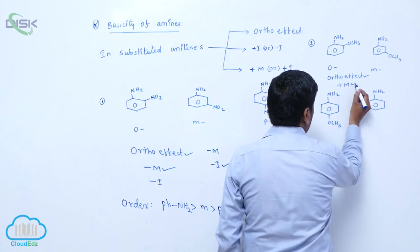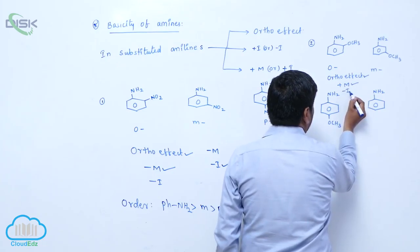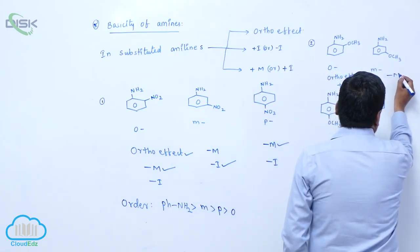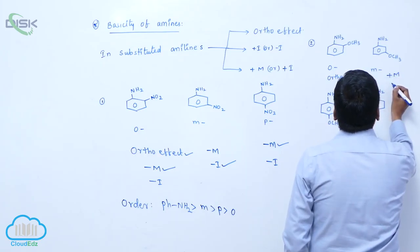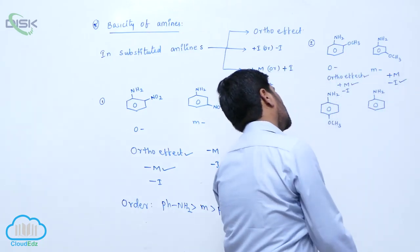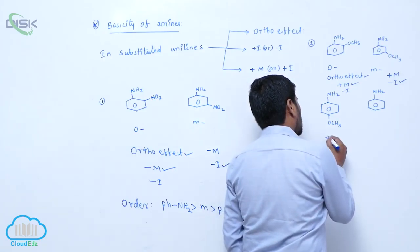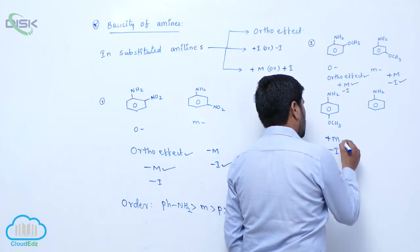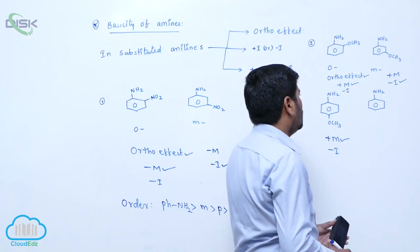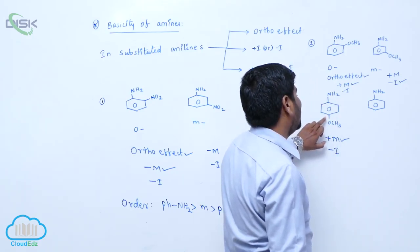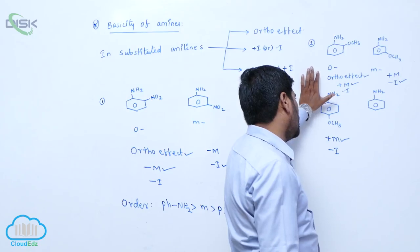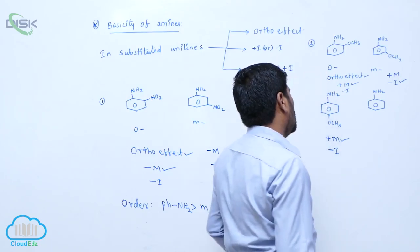Both Ortho-Effect and plus-M effect are predominant over minus-I effect. For meta, between plus-M and minus-I, the minus-I is predominant. For para, between plus-M and minus-I, plus-M effect is predominant. In the para case there is no ortho substitution, so the electron releasing capacity increases, and the nitrogen lone pair of electrons is easily available for donation.